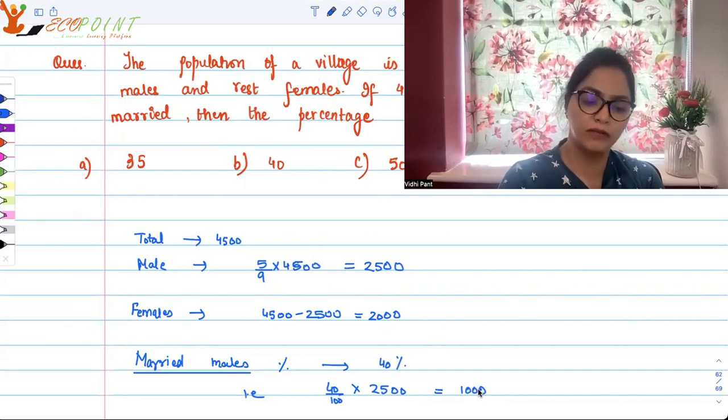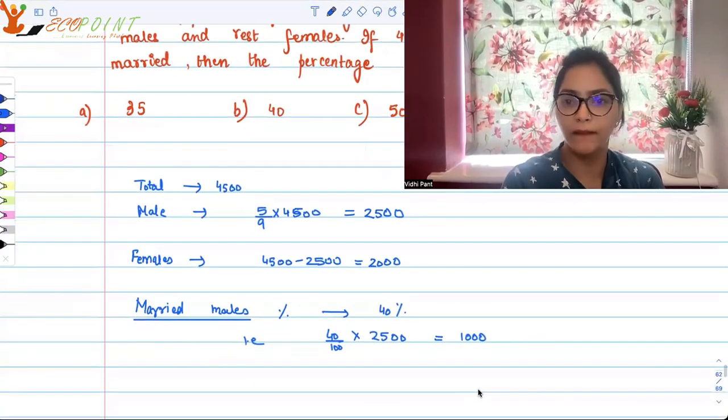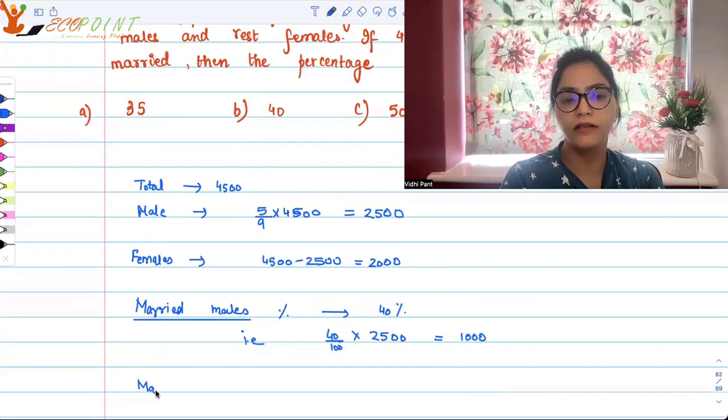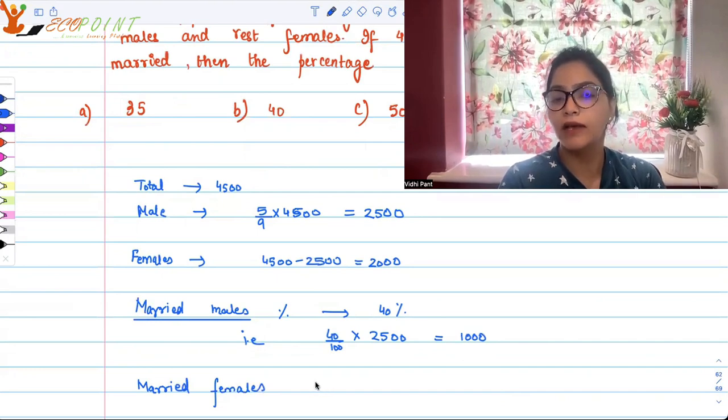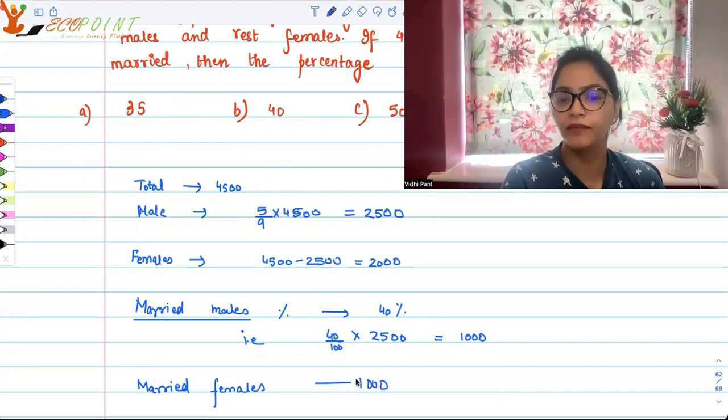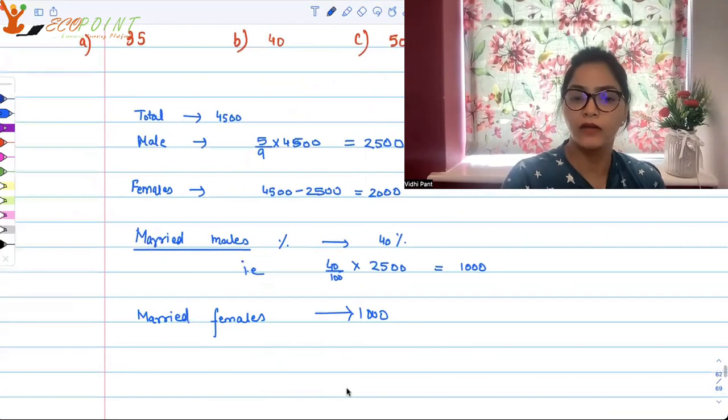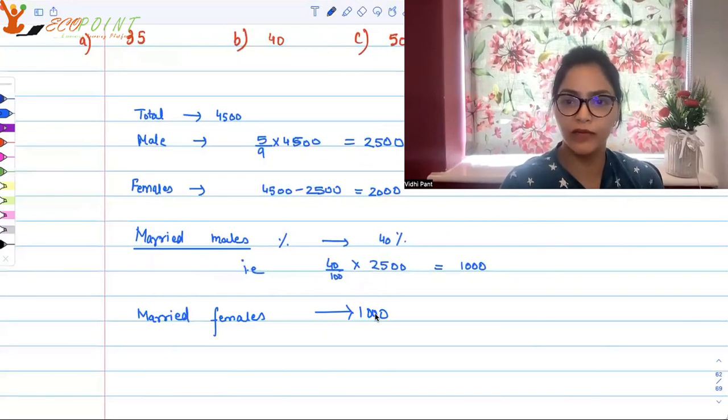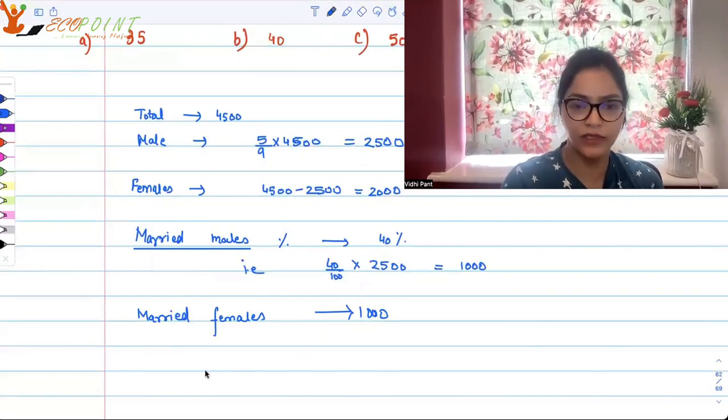Assuming male and female are getting married, married females would be 1000, assuming we are only dealing with these 4500 people and marriages are among them only. So 1000 females are married.